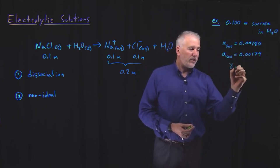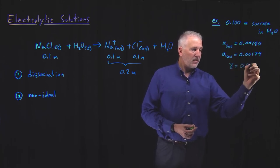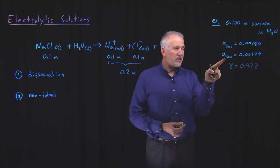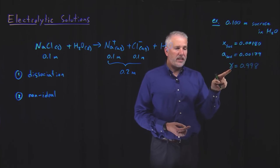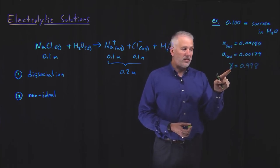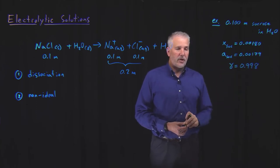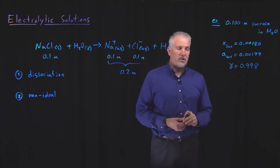So if we measure the activity of sucrose, that turns out to be pretty close to the mole fraction, which means that the activity coefficient, because the activity is a little less than the mole fraction, the activity coefficient is a little less than one. So this is a fairly ideal solution. Sucrose is fairly ideal. It has an activity coefficient pretty close to one. So far so good.